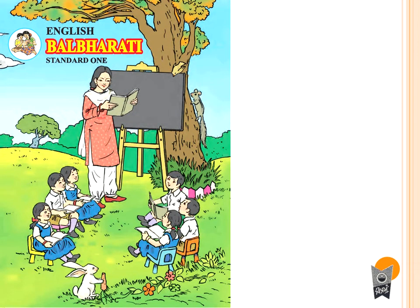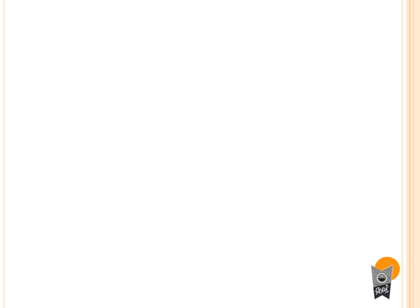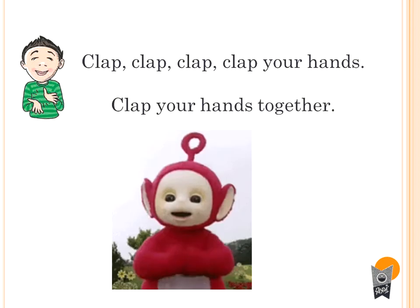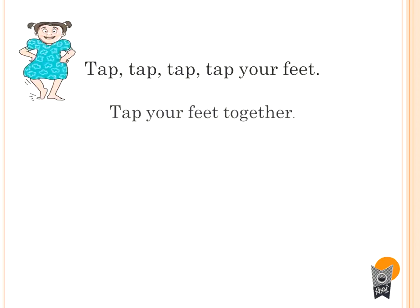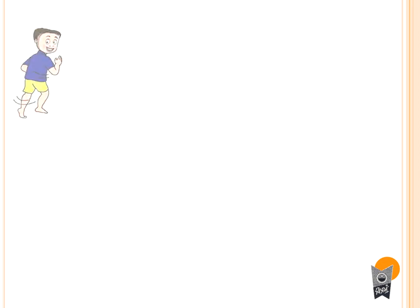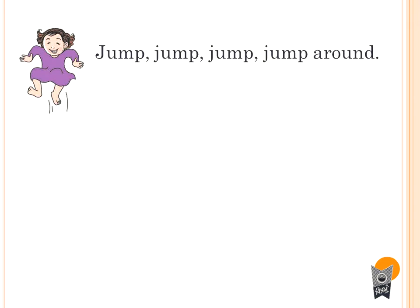We'll open our English textbook at unit 1. Let's revise the happy song. Sing with me. Clap, clap, clap, clap your hands, clap your hands together. Tap, tap, tap, tap your feet, tap your feet together. Walk, walk, walk around, walk around together. Jump, jump, jump around, jump around together.